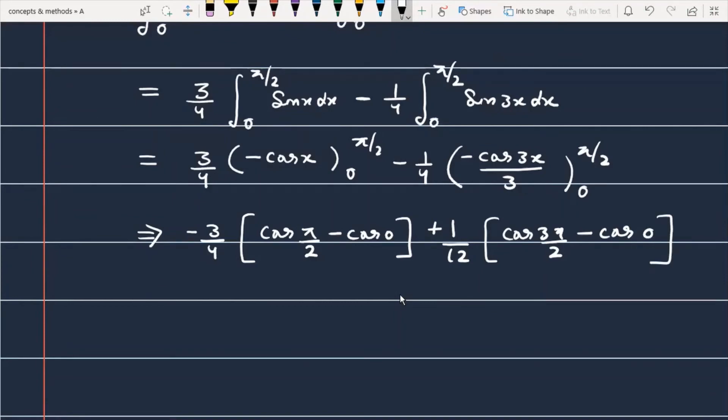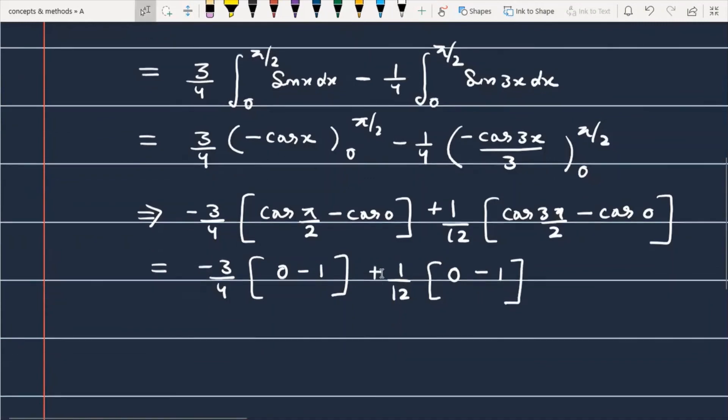Now we have to simplify it. This is minus 3 by 4. Cos π/2 is 0, cos 0 is 1. Plus 1 by 12, cos 3π/2, this value is again 0, and cos 0 is equal to 1, so this is minus 1.